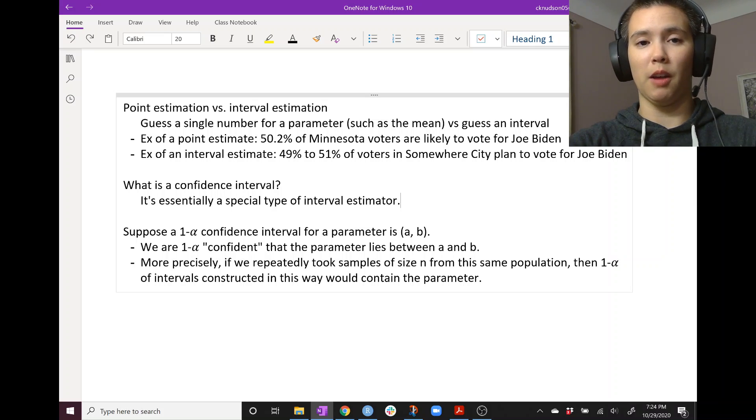So suppose that I have a 1-alpha confidence interval for a parameter, and that confidence interval goes from A up until B. Then one way that we could explain what that means is we could say that we are 1-alpha confident that the parameter lies between A and B.